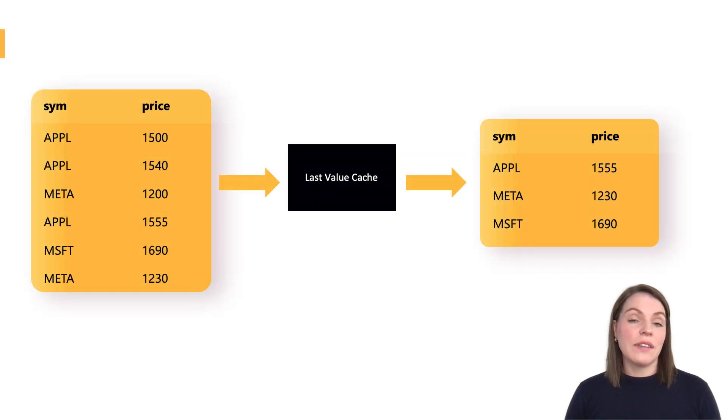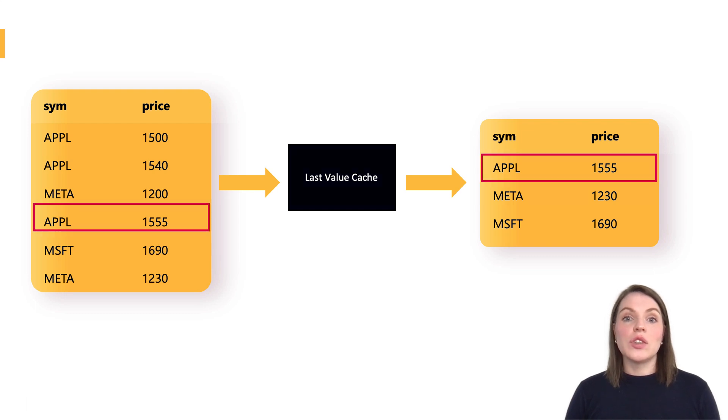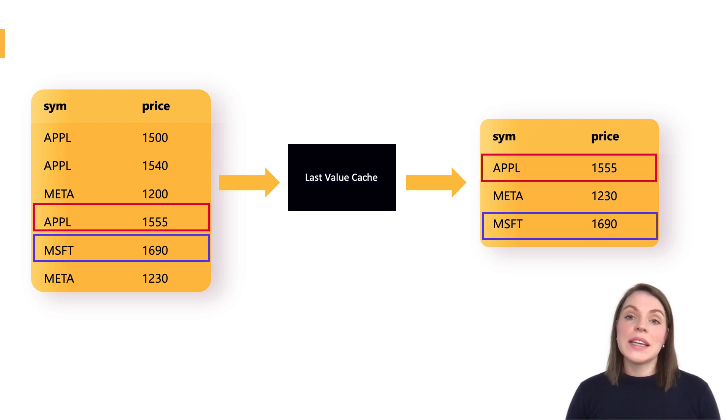In this module, we'll look at adding our own custom streaming analytics. Now in the quick start, we already had a very basic version of this, sometimes also known as a last value cache. As the name suggests, it's a process which stores only the last value for a particular key in a table, and for us that was the SIM key.